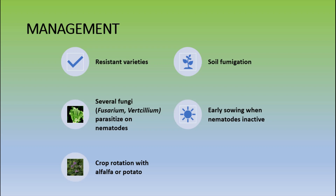To manage cyst nematodes, there are a few strategies. Resistant varieties can be used. Soil fumigation is another option. Several fungi such as Fusarium and Verticillium are parasitic on cysts of these nematodes and can serve as biocontrol agents. Early sowing, when nematodes are inactive, is also recommended. Crop rotation is very important — for example, alfalfa or potato can be used in rotation for management of non-potato cyst nematodes.